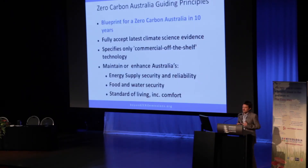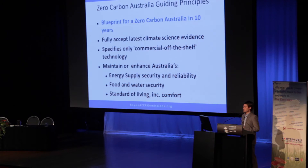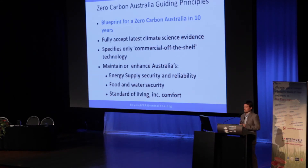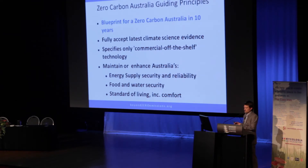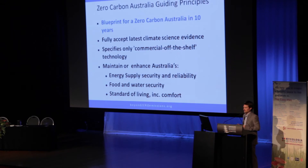The Zero Carbon Australia project is premised on a couple of key principles. It's a blueprint for zero carbon in 10 years. As part of that, we fully accept the latest climate science evidence. Because it's a 10-year plan, we need to pick things that are available today — technologies we can buy off the shelf that are commercially available. Our projects need to maintain or enhance Australia's energy security, food and water security, and standard of living. In the context of buildings, that's comfort, and we're hoping we can improve comfort as well.